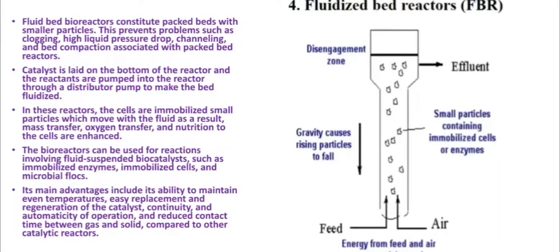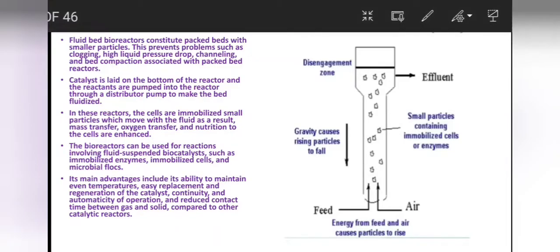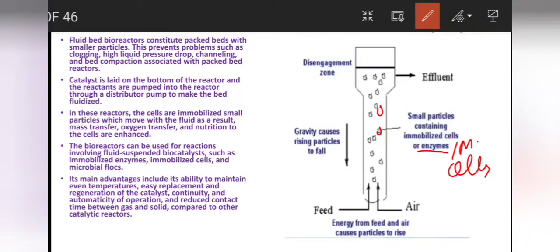The fourth type is the fluidized bed reactor. In this type of reactor, enzymes are immobilized onto solid granular material. These small particles have a tendency to settle at the bottom of the fermenter due to the force of gravity.